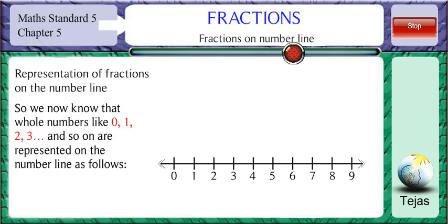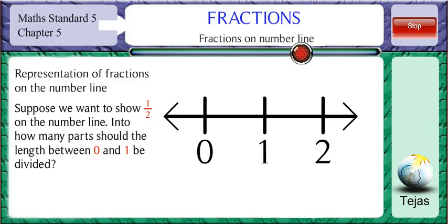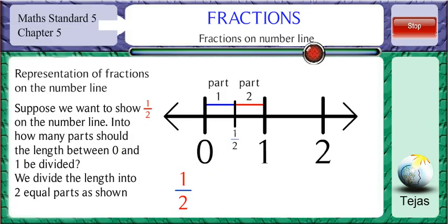So we now know that whole numbers like 0, 1, 2, 3 and so on are represented on a number line as shown. Suppose we want to show the fraction 1 by 2 or half on the number line. Into how many parts should the length between 0 and 1 be divided? We divide the length into 2 equal parts as shown.